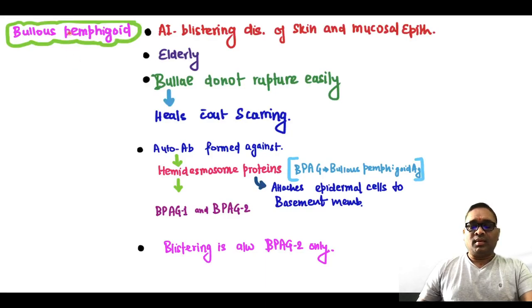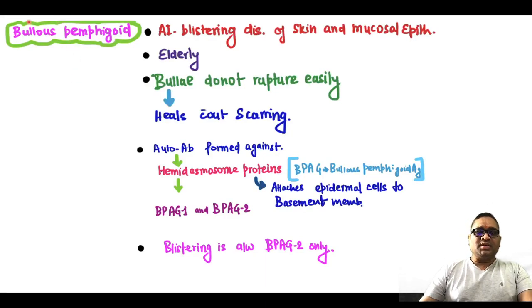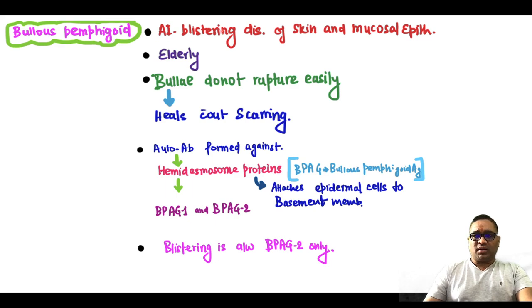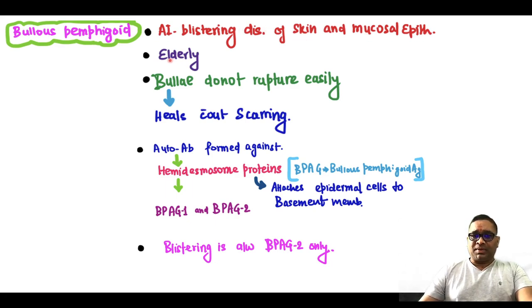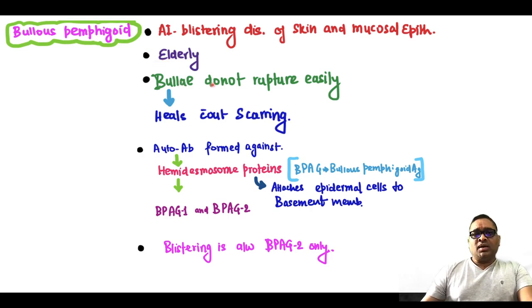Hello everyone. In this video I am going to tell you about bullous pemphigoid, an autoimmune blistering disorder of the skin and the mucosal epithelium. This usually occurs in elderly patients, the bulla will not rupture easily, and they will heal without scarring.